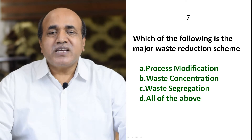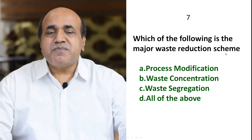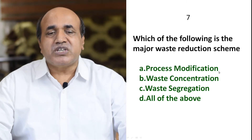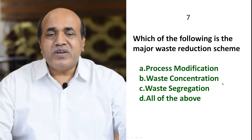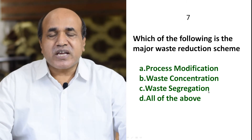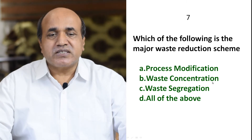Question 7: Which of the following is the major waste reduction scheme? The options include process modification — changing the industrial process — waste concentration, and waste segregation. All three are part of waste reduction schemes. So all of the above. D is the correct answer.